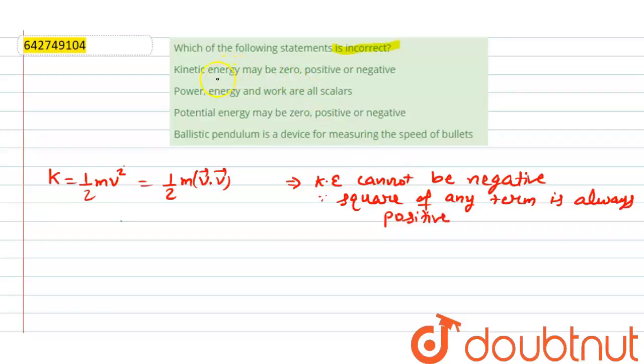So first option is incorrect because it says kinetic energy may be zero, positive or negative.